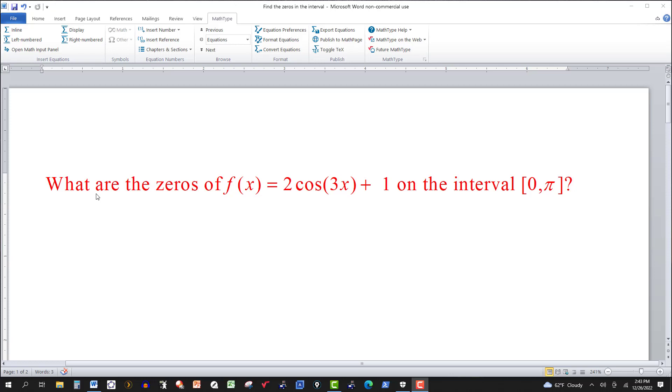In this video we want to find the zeros of the function f(x) = 2cos(3x) + 1 on the interval from 0 to π. That means we're including the zero and we're including π. Now we can test the endpoints of this interval easily.